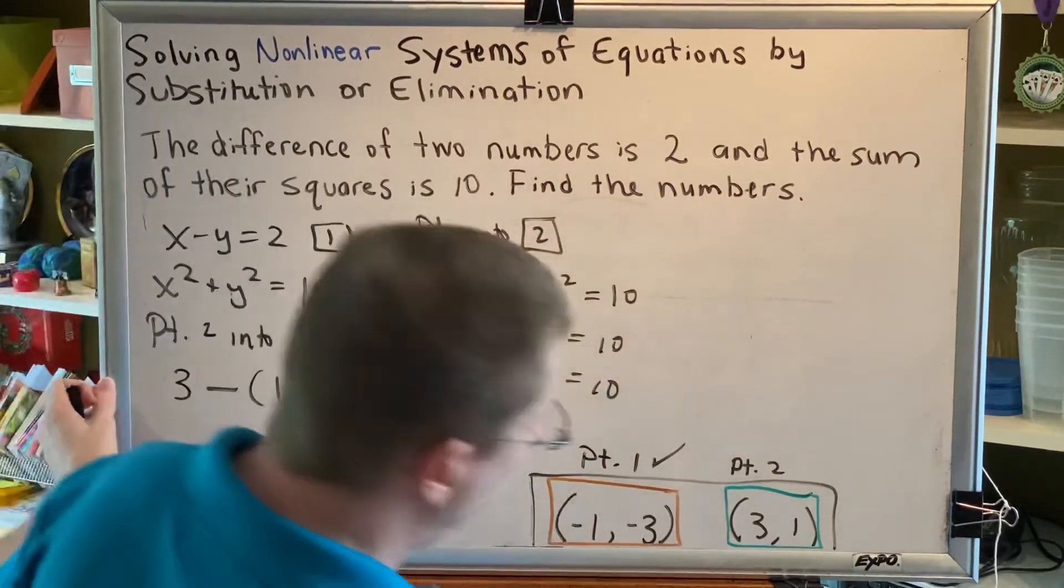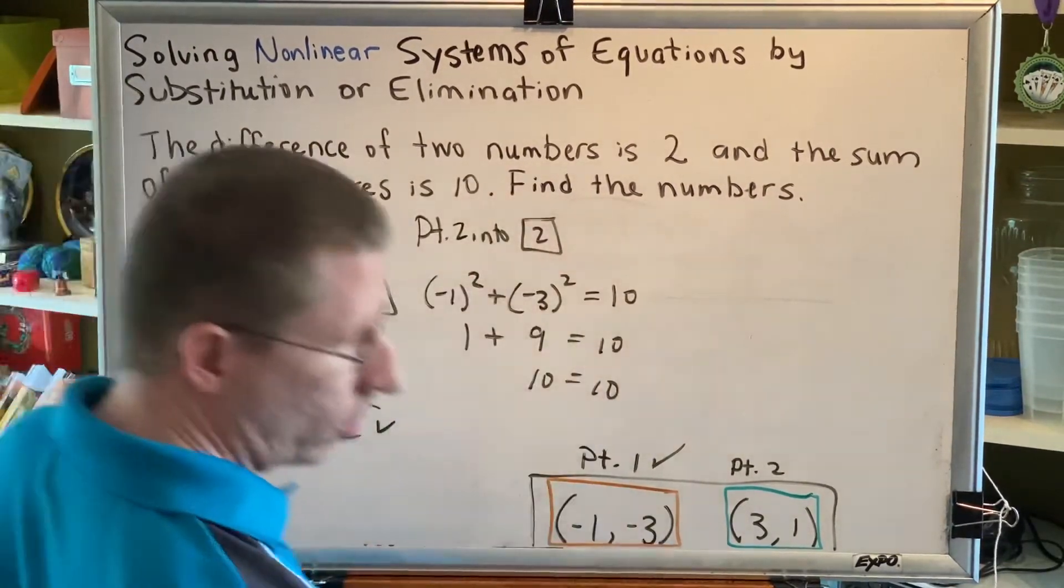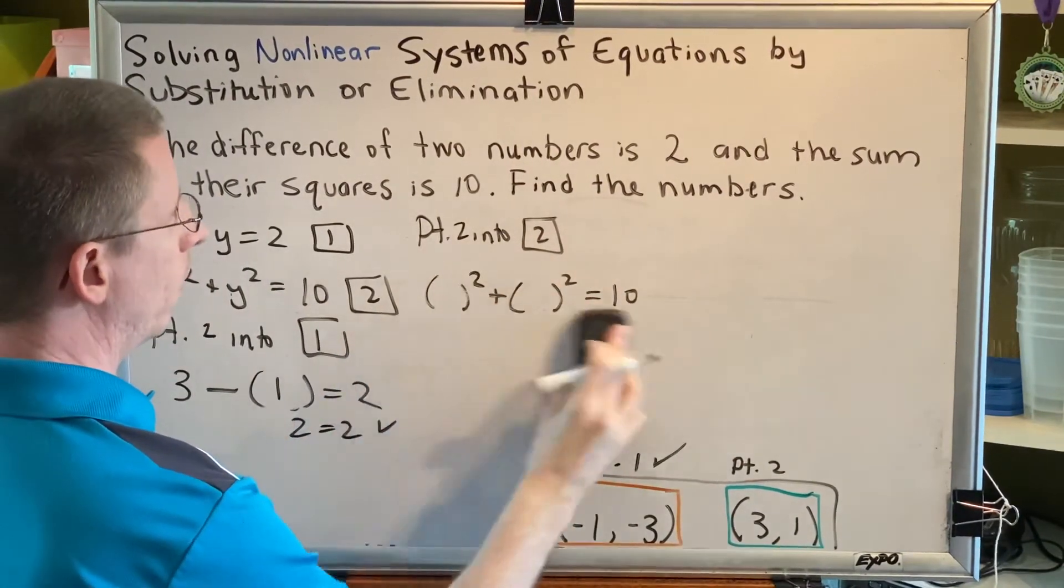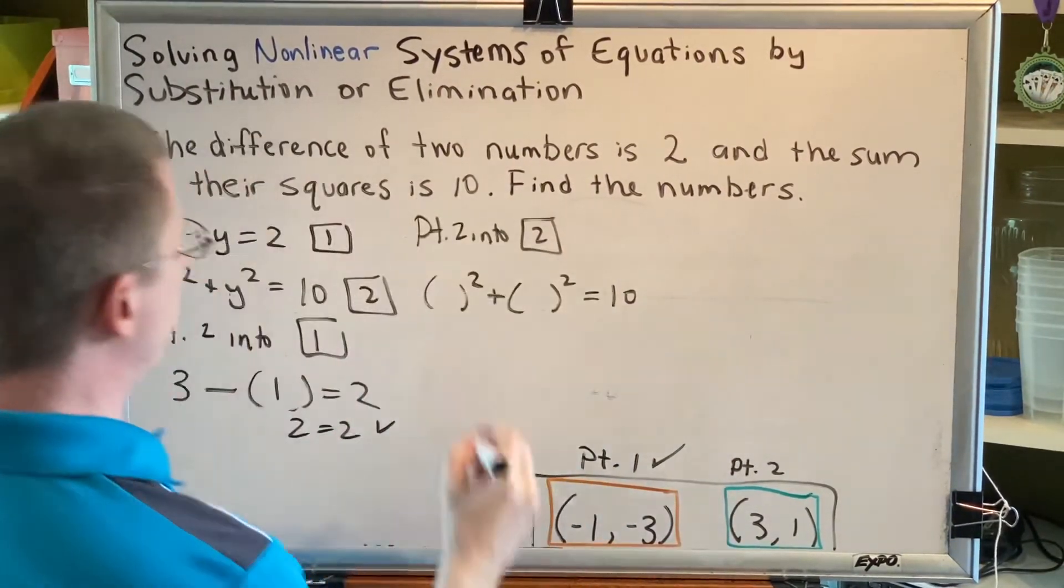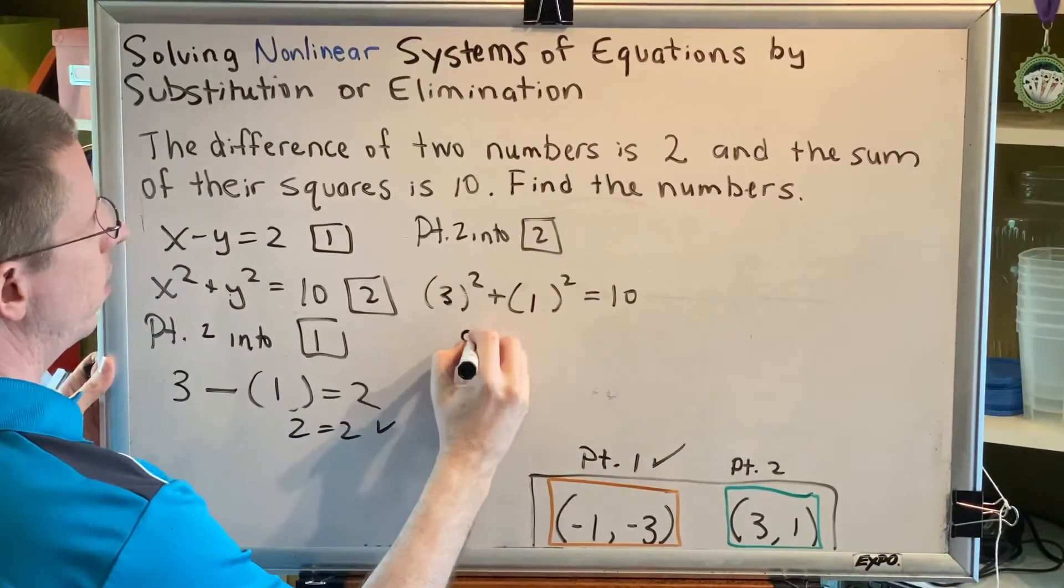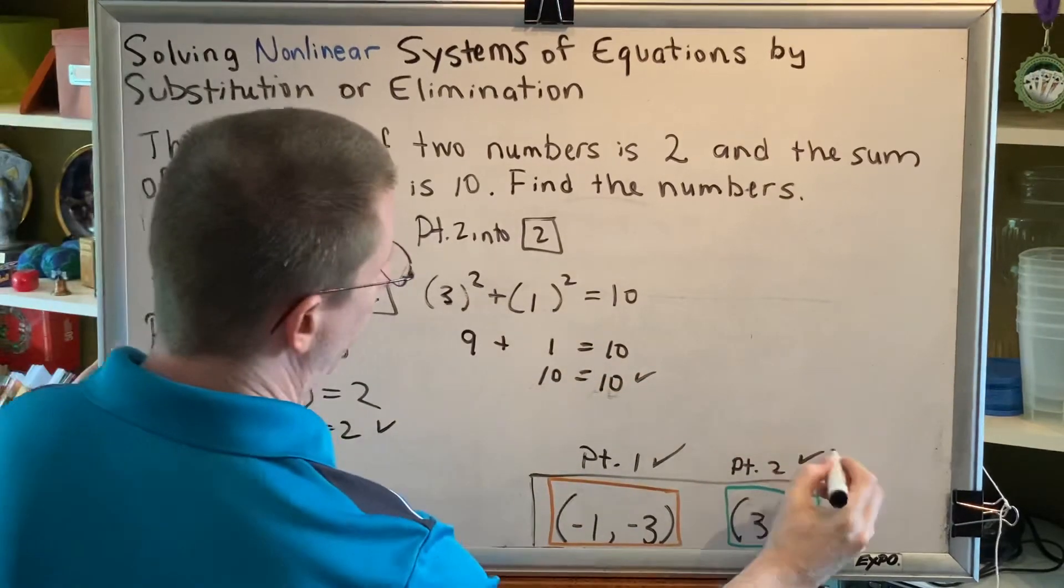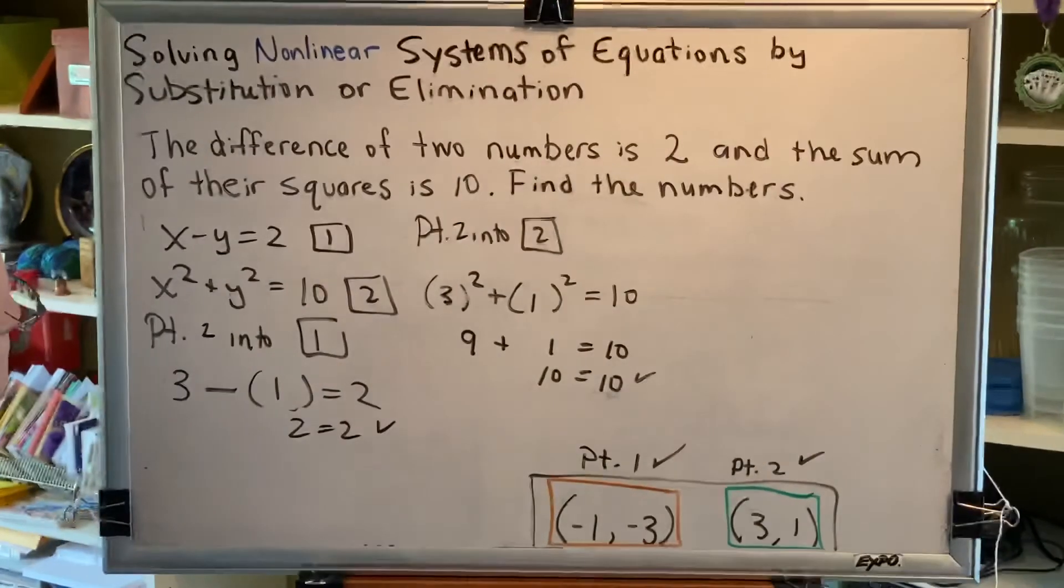And then we will plug point 2 into equation 2. So x is 3, y is 1. 9 plus 1 equals 10. 10 equals 10. And that proves that point 2 really is a solution.